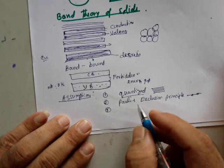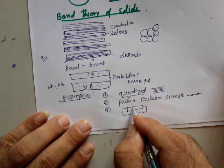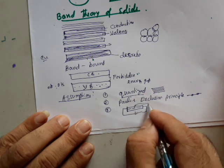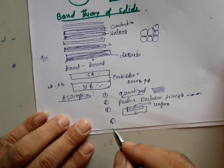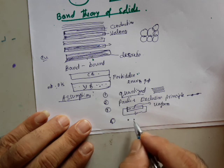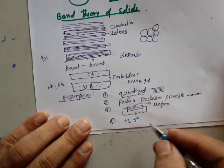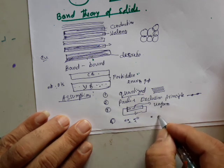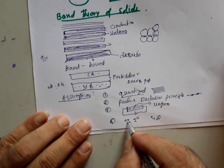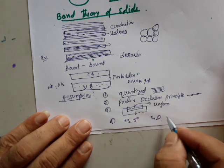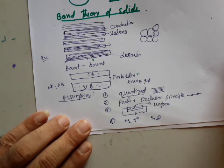The third assumption says that whenever you apply an electric field between the two ends of a conductor, the potential or electric field inside it is uniform — a uniform electric field exists throughout the given conductor. The fourth assumption is that you must neglect the repulsion between electrons and also neglect the attraction between an electron and a lattice ion. These are the four assumptions of the quantum free electron theory.